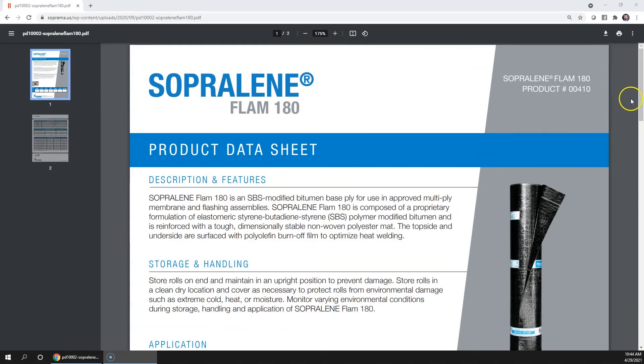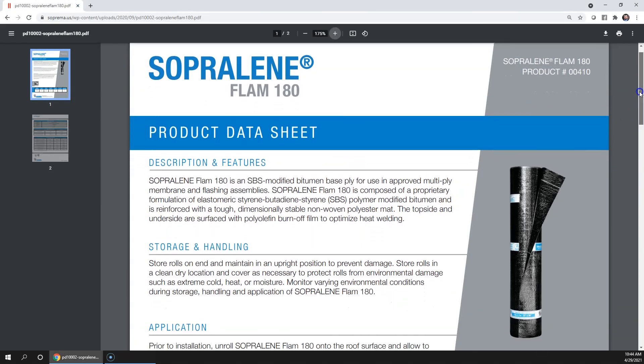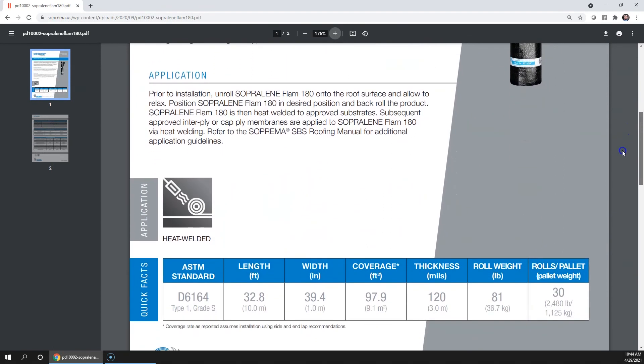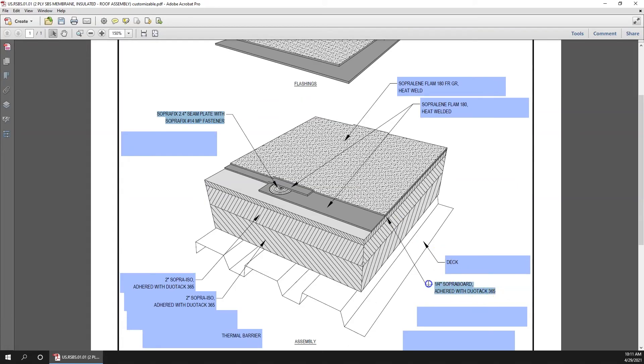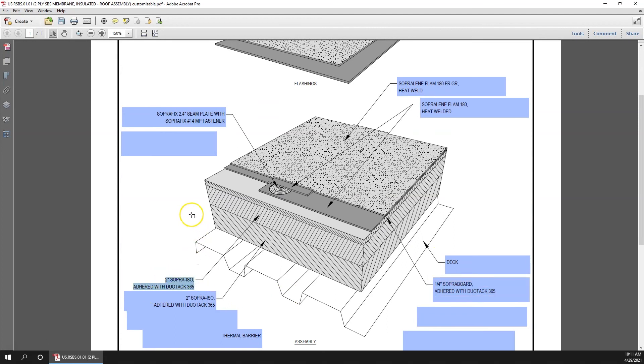There are several variables to consider when selecting impact resistant roofing: membrane type and thickness, the presence of fasteners and plates beneath the membrane, the cover board, and the substrate beneath the cover board. The cover board is a critical component to help resist impact.